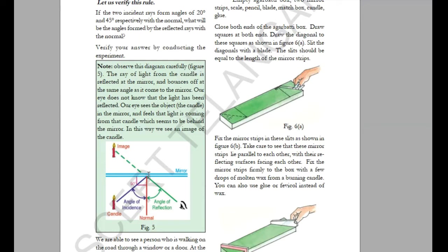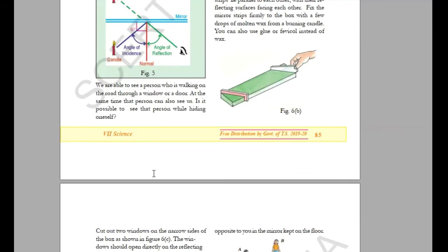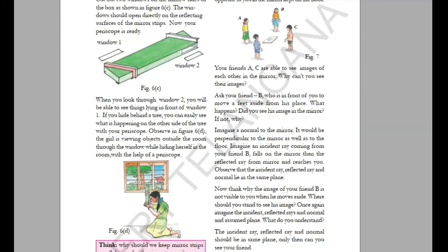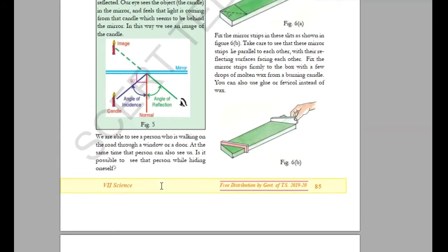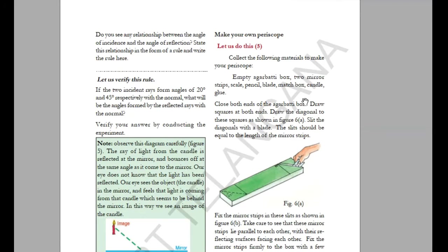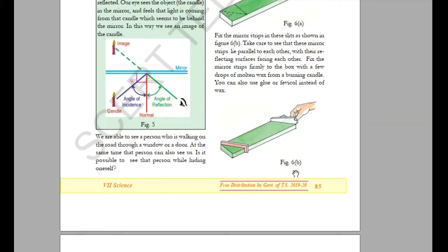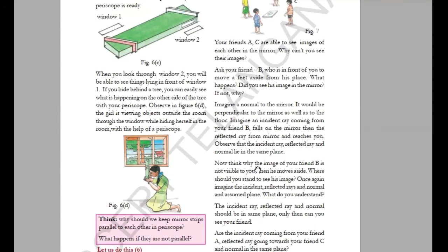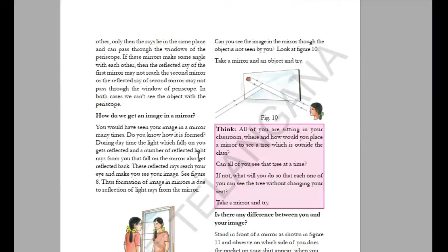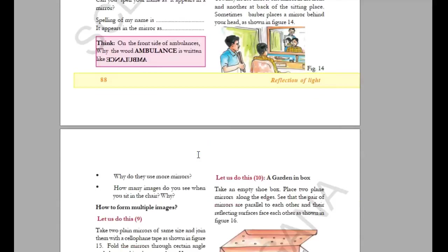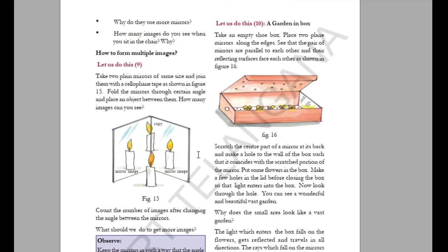The law of reflection states that angle i is equal to angle r. There is also an activity to make a periscope in the 7th class chapter. This is what you have learnt in your 7th class.